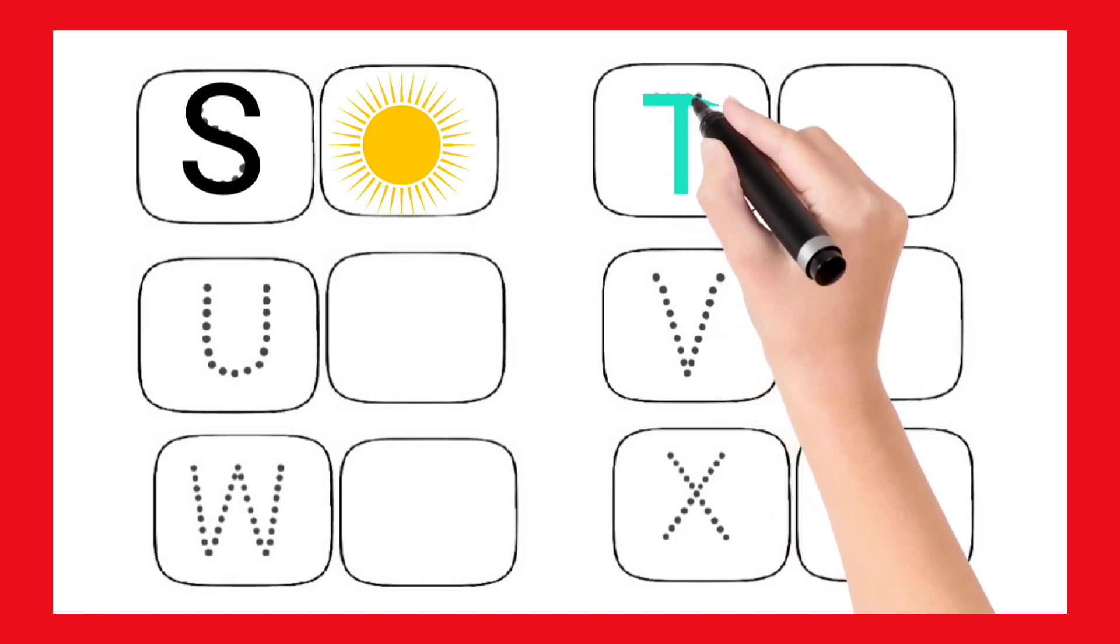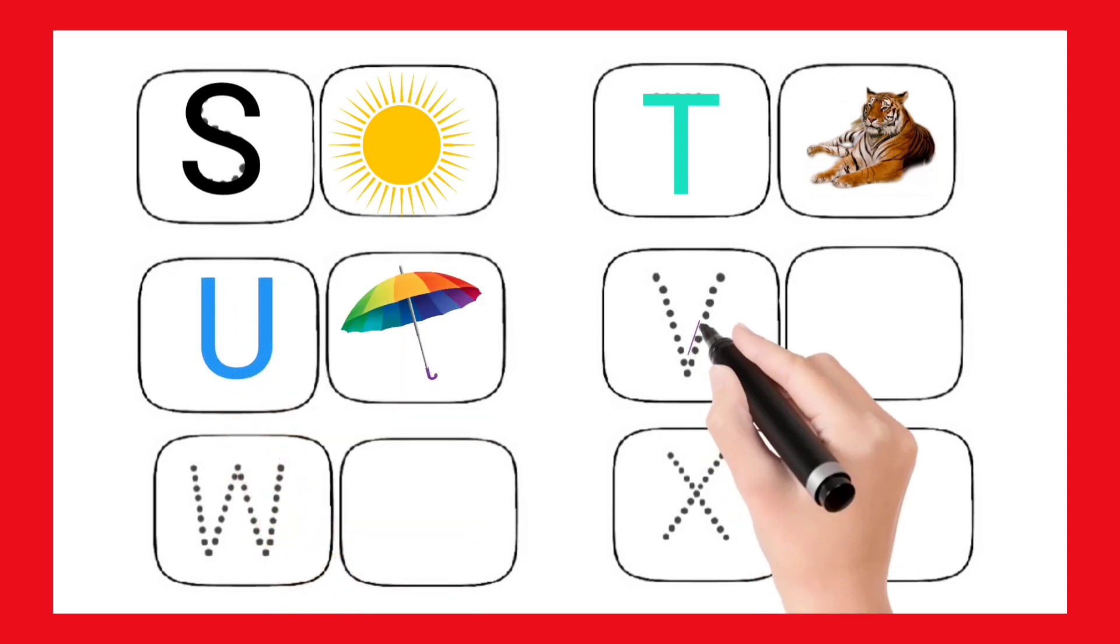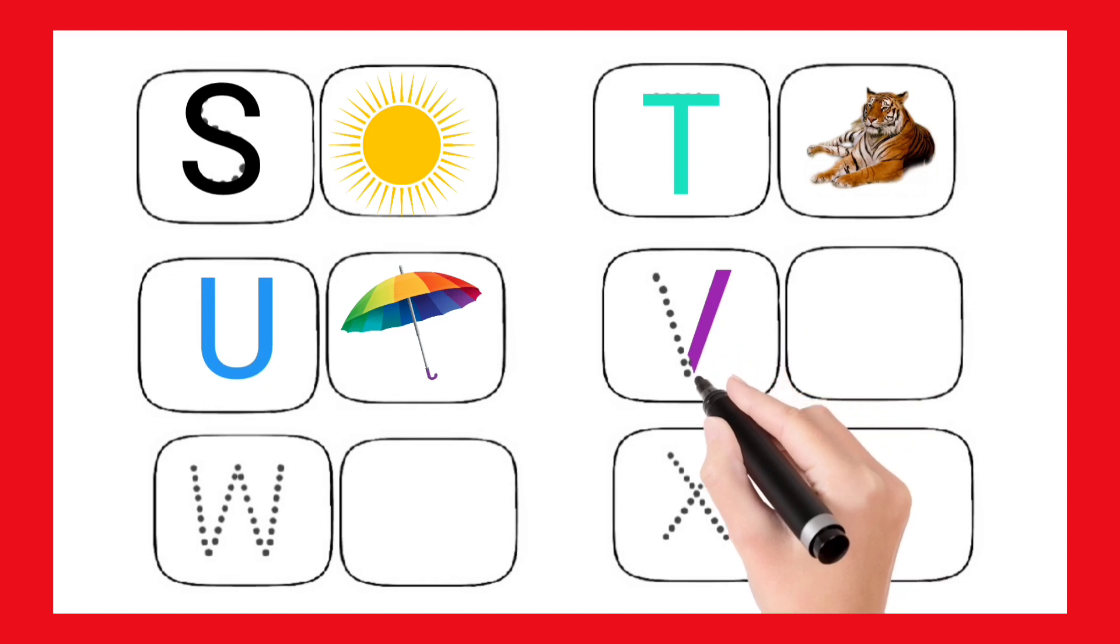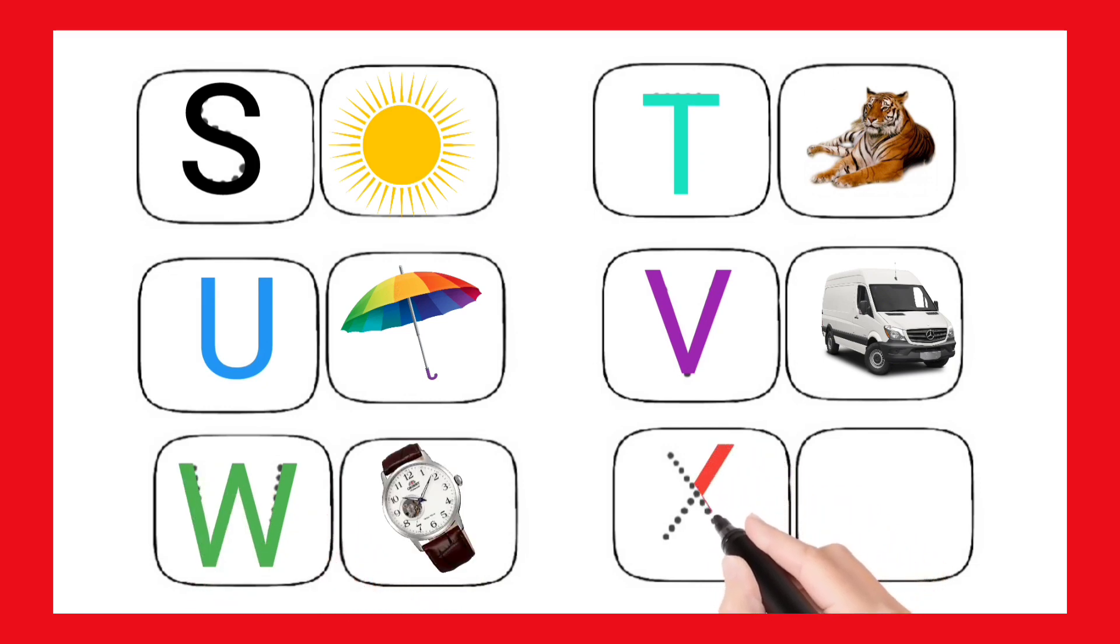T for Tiger. U. U for Umbrella. V. V for Van. W. W. W. W for Watch. X. X.